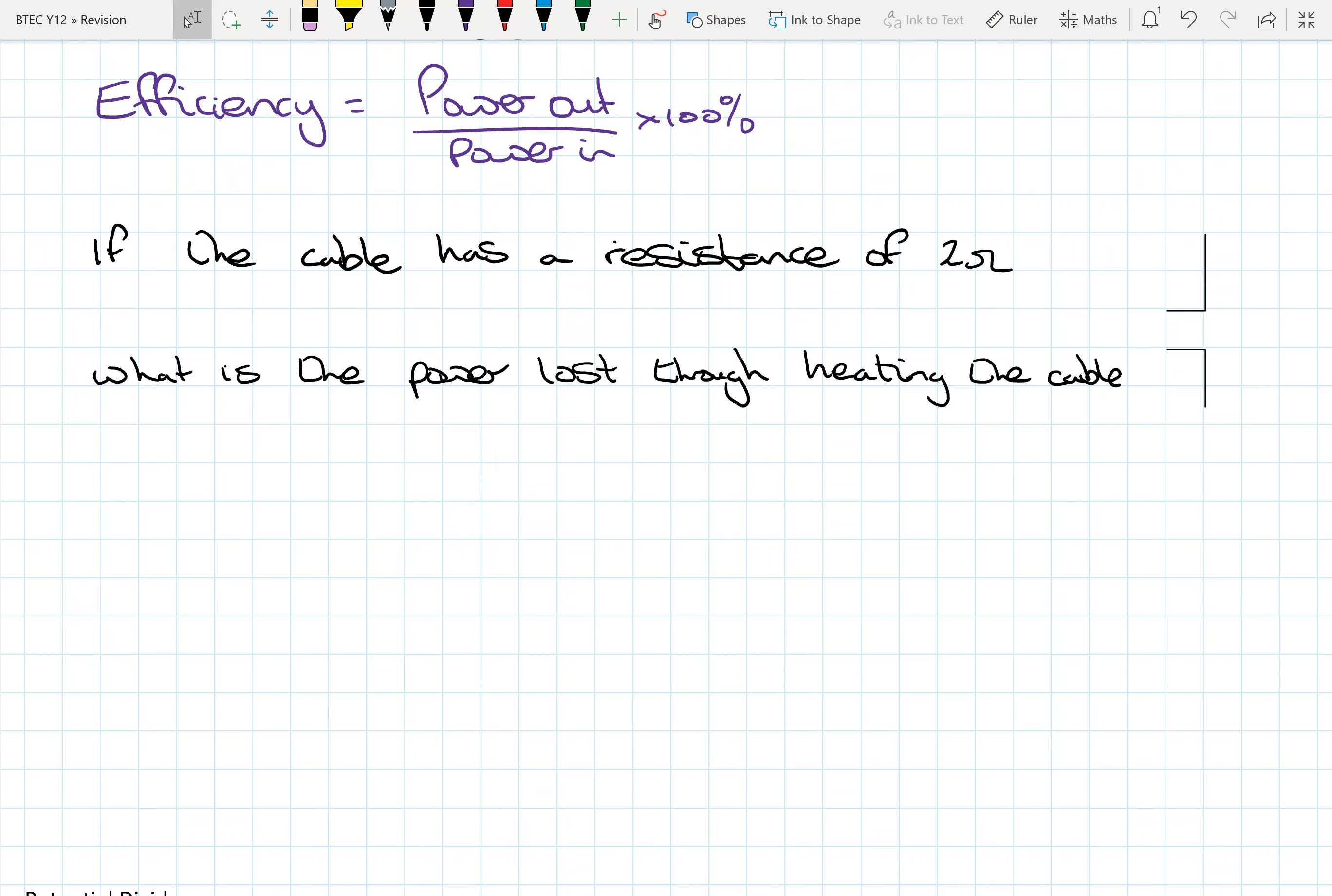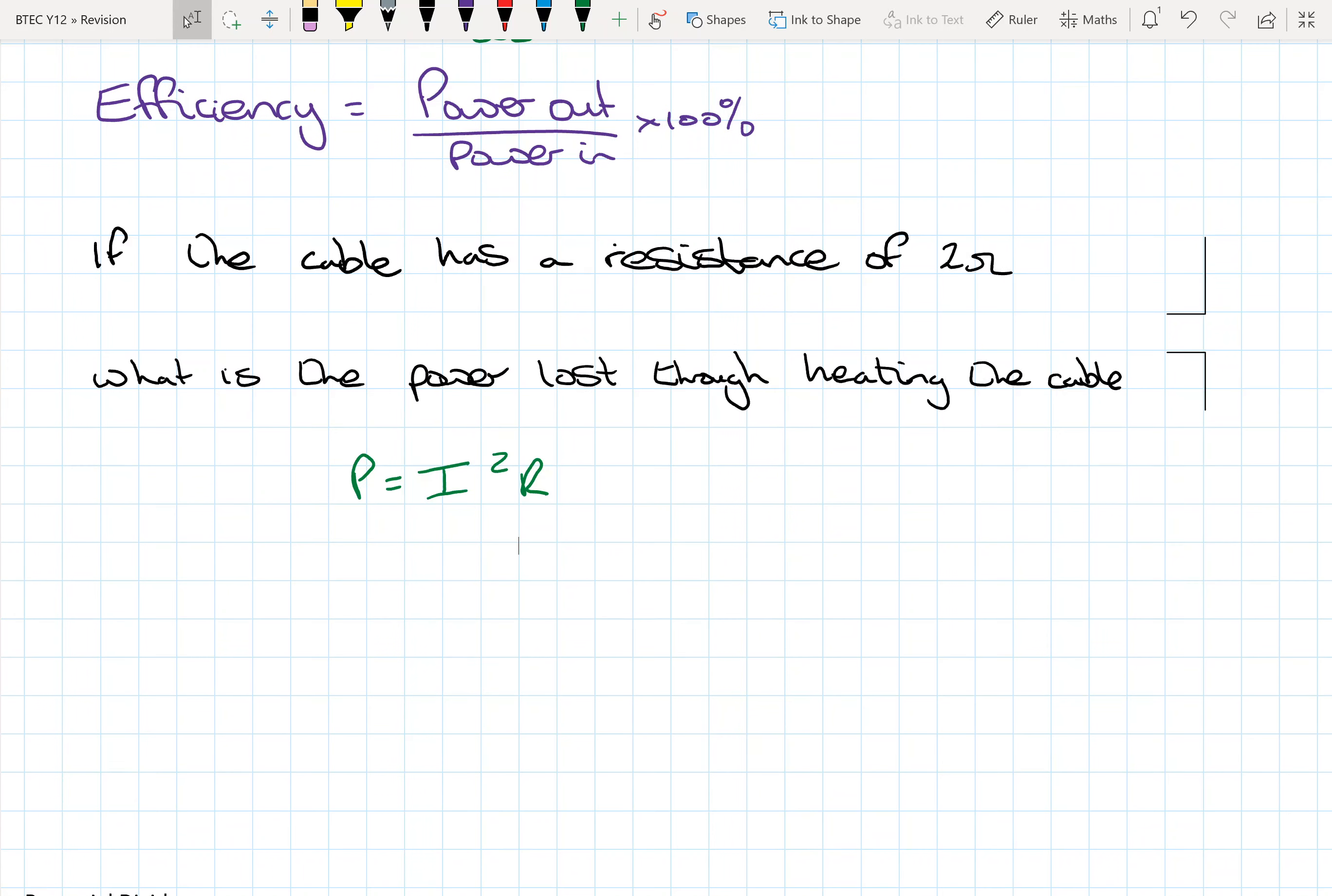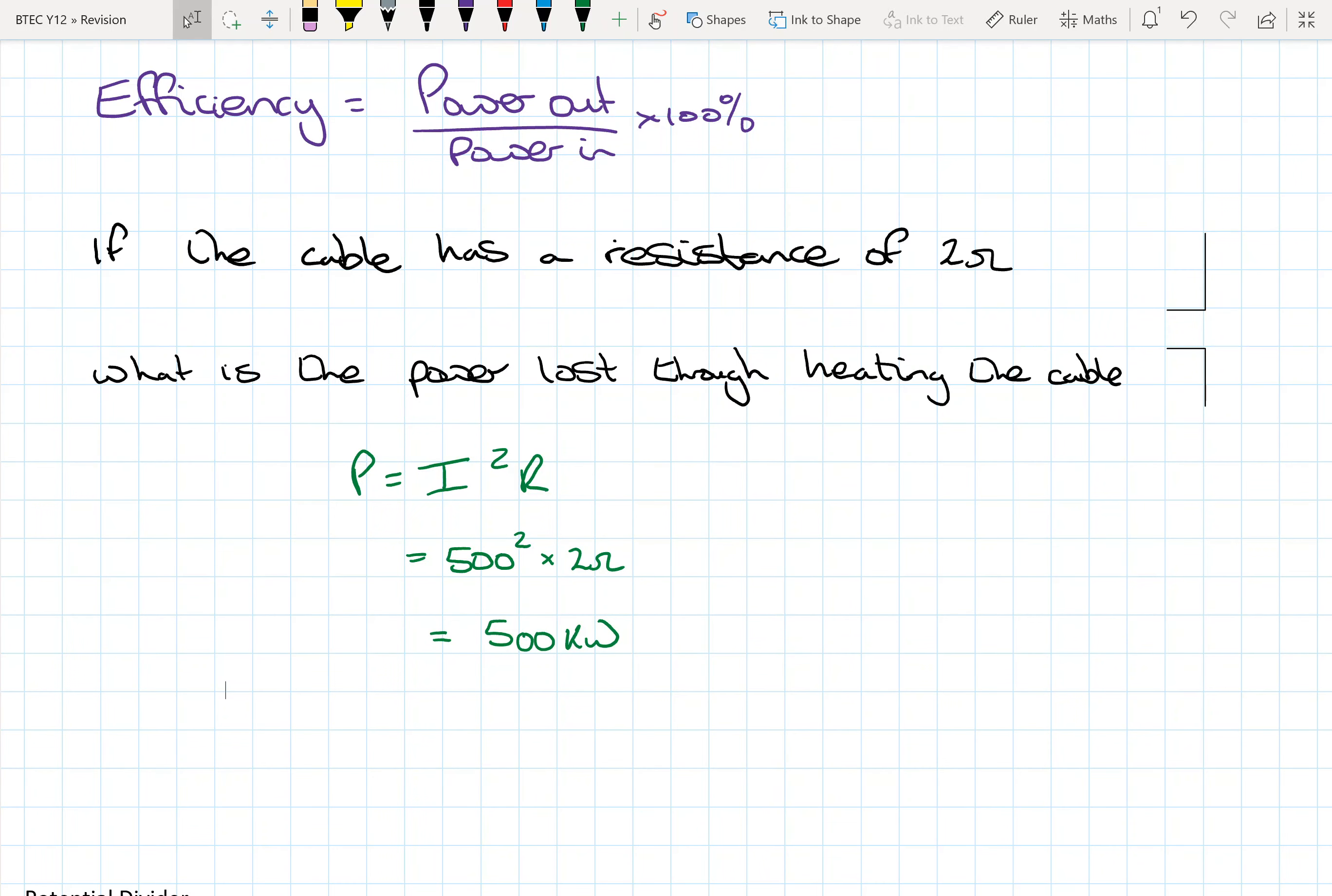Okay. So we know what the current is, 500 amps. We know what the resistance is, so we can work out the power that way. So 500 squared times 2 ohms gives us 500 kilowatts. So that's our power lost on the cables.